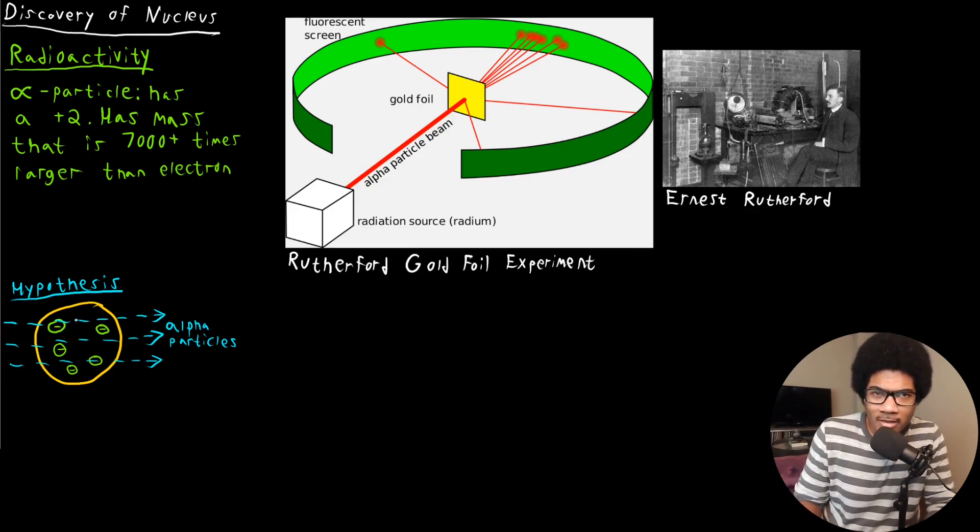And the electrons, even though they're negatively charged and would attract these positive charges, they're way too small to do anything to alpha particles that are traveling at an object at high speed. So basically his hypothesis was that if I come through with alpha particles to any atom that has this type of structure, those alpha particles are just going to go straight through uninterrupted. Or if they're deflected, maybe slightly.